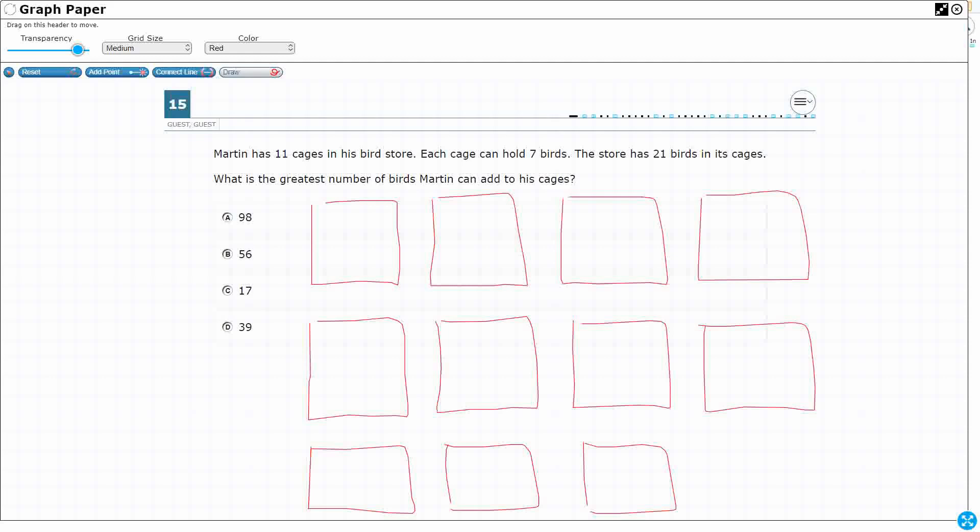Now, each cage can hold 7 birds, and so let's just put a 7 underneath each one. All right, and I'll put a 7 on the side here because I'm kind of running out of room. There we go.